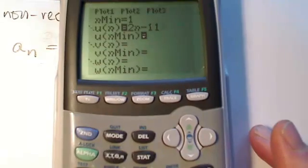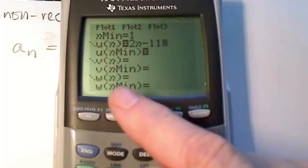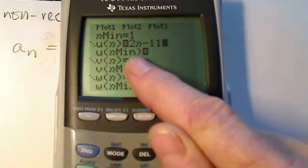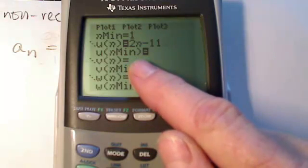Because this is a non-recursive form, you do not need to put something in for u of n min. We will have to enter a value if we do recursive.